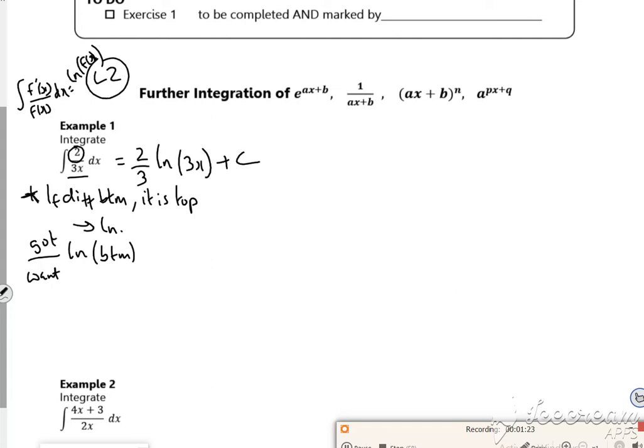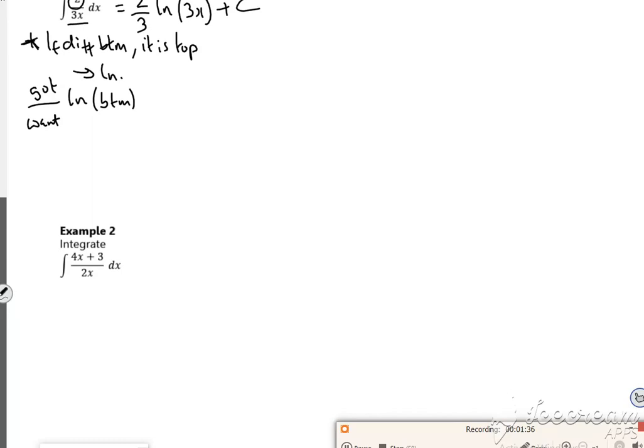There is another way of writing it, where you take the 2/3 out as a factor. You kind of actually get the same answer in the end, but it just looks a little bit different, and the completed pack does that. When I say, what have you got divided by what do you want?